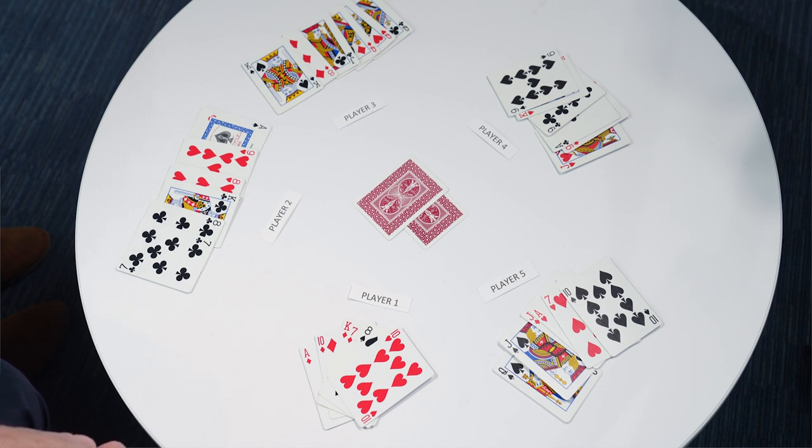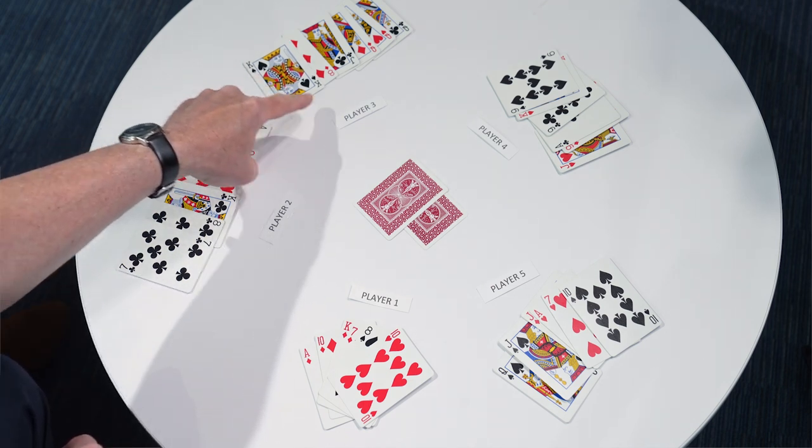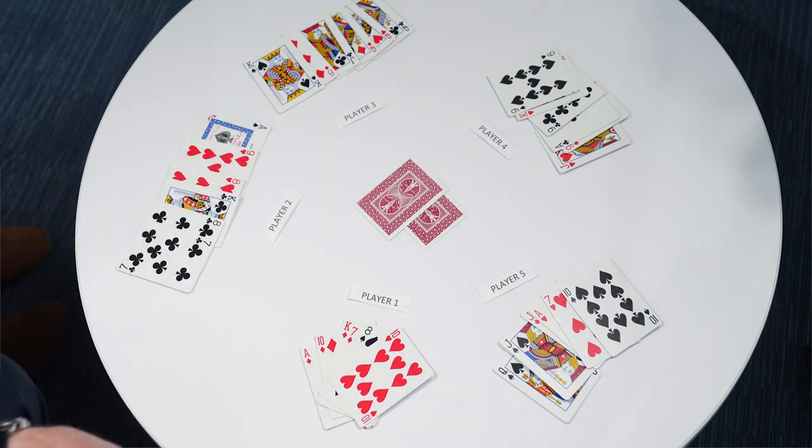Since Player 2 does not have any trump, the power cards, they would not want to pick and therefore pass. Player 3, on the other hand, has 3 queens and a jack and an 8 of diamonds. They have a very powerful hand. They would be likely to pick.